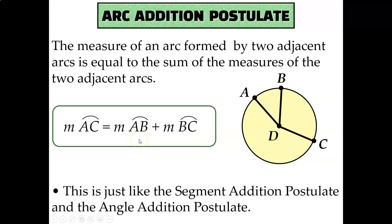You might remember from first semester the segment addition postulate and the angle addition postulate — now we're learning the arc addition postulate. They all say the same thing: little part plus little part equals the whole. So the measure of arc AC equals the measure of arc AB plus the measure of arc BC.